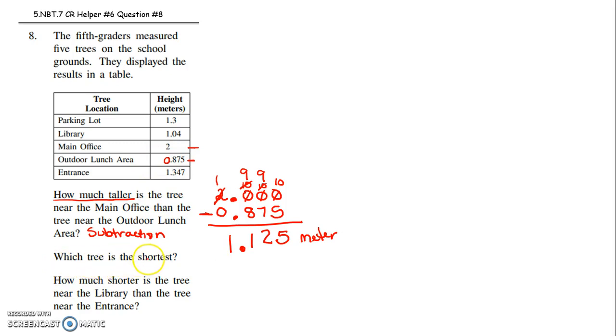Which tree is the shortest? Okay, which tree is the shortest? Well, the 2, that's definitely not the shortest. And these all have ones in the ones place, so those aren't the shortest. Just go place value by place value.